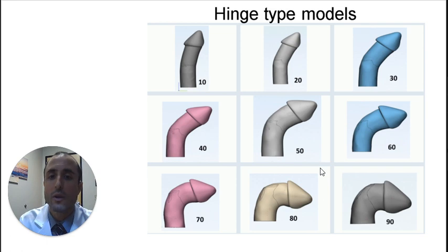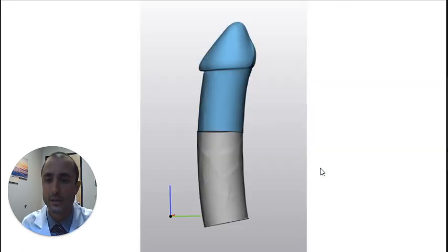Gabe initially created a set of 3D penile models with the hinge technique. These models were created in a few steps. First, he started with a straight penis and the penis was divided at its half.